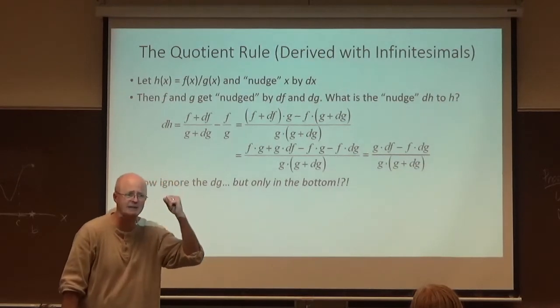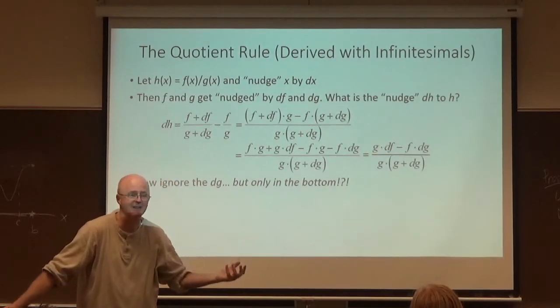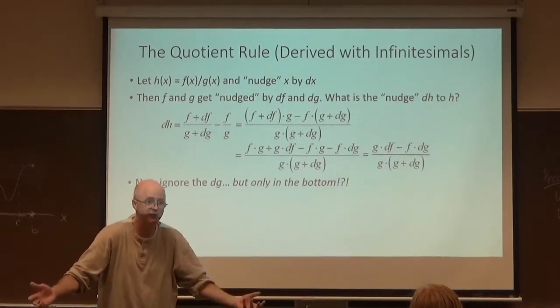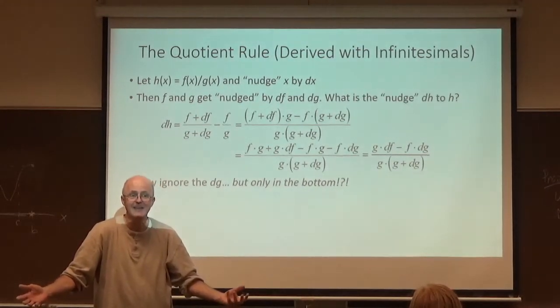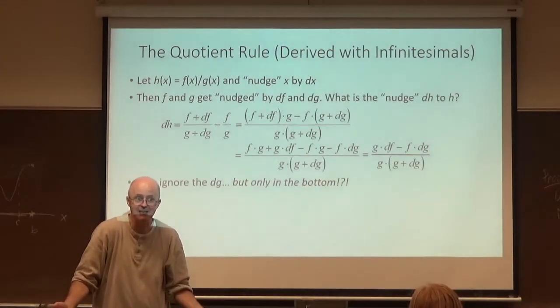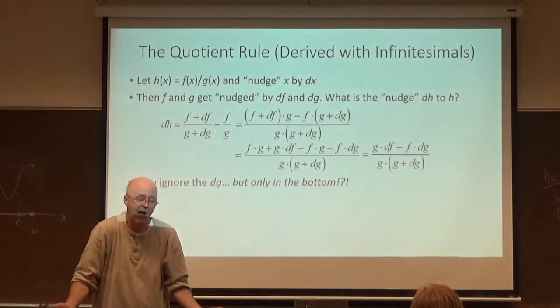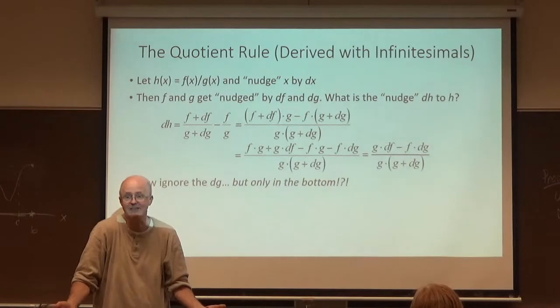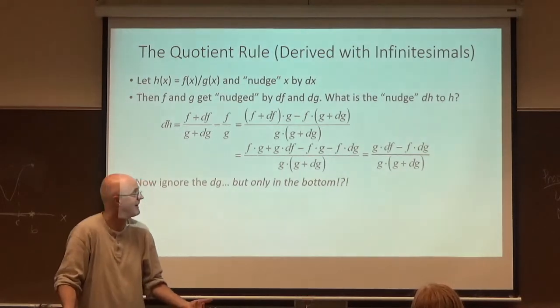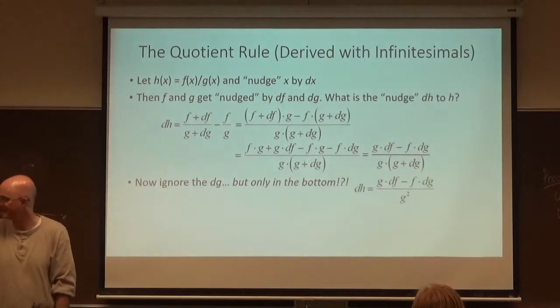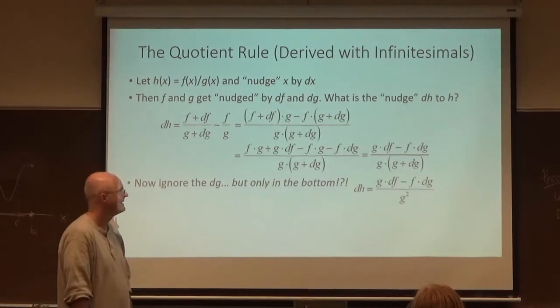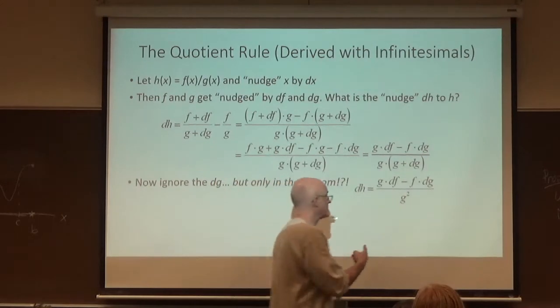Turns out, you ignore the dg, but only in the bottom. And this is the big scratch in your head. Like, why do we only ignore it in the bottom? How is this possibly valid? If you feel confused, you should be confused, because it is confusing. It produces the right answer in the end, but it's like, why do it that way instead of some other way? If we ignore the dg in the bottom, the bottom just becomes g squared. And we start to see the quotient rule.